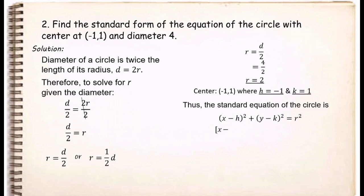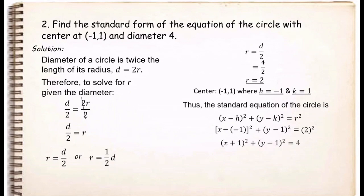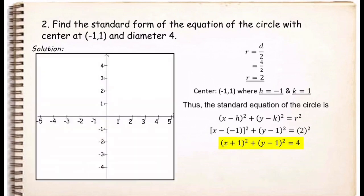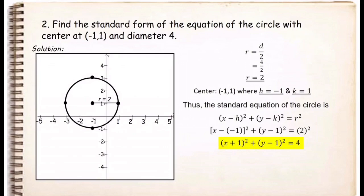We can now find the standard equation of the circle with center (−1, 1), where h = −1 and k = 1, and r = 2. Since the center is not at the origin we use (x minus h)² + (y minus k)² = r², replacing h, k, and r. We get (x minus (−1))² + (y minus 1)² = 2², which simplifies to (x + 1)² + (y minus 1)² = 4, because negative times negative equals positive. To draw the graph, plot the center at (−1, 1), count 2 units in each direction, and connect those points. This is the graph of the circle with radius 2 and diameter 4.